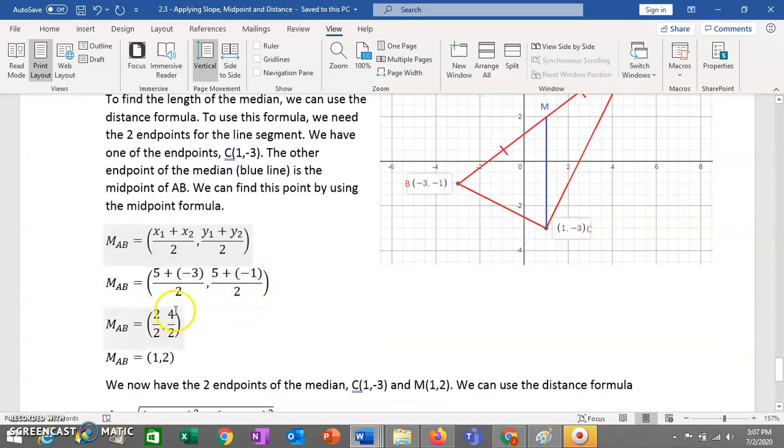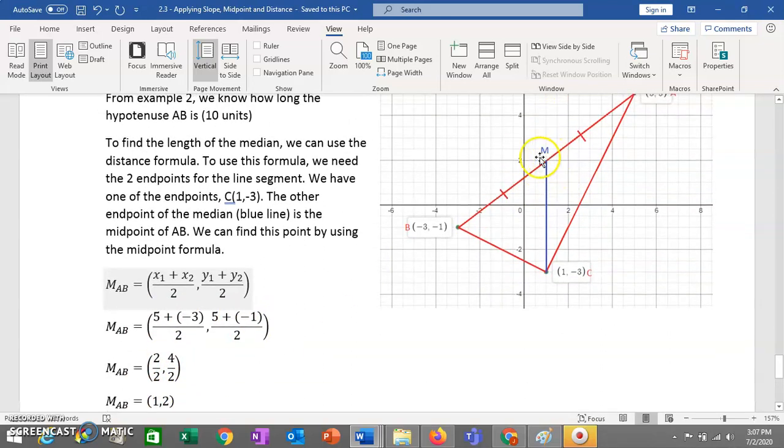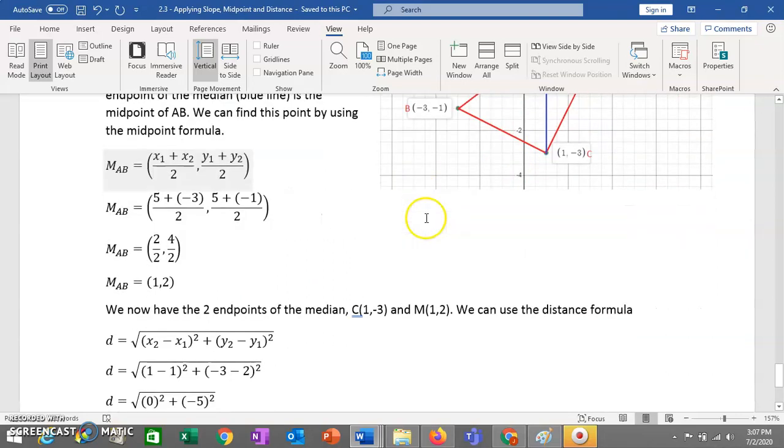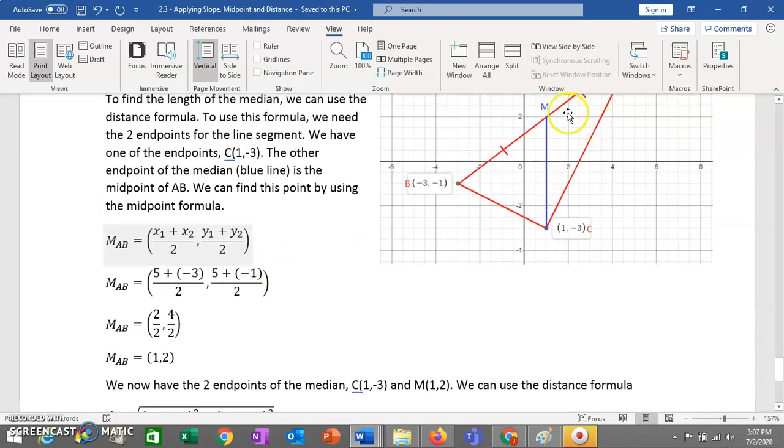In this case, you're adding them. So your x1 in this case will be 5. Your x2 in this case will be negative 3. Your y1 in this case will be 5. And your y2 in this case will be negative 1. So we add those together, simplify, and we get that our midpoint here is at (1, 2). And again, if you graph this, you can see, does your answer look reasonable? Well, yeah, that looks very much like it's point (1, 2).